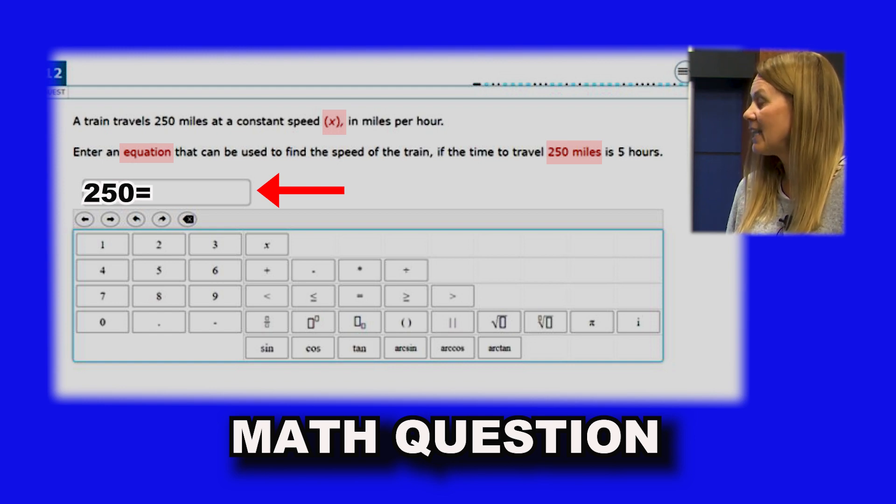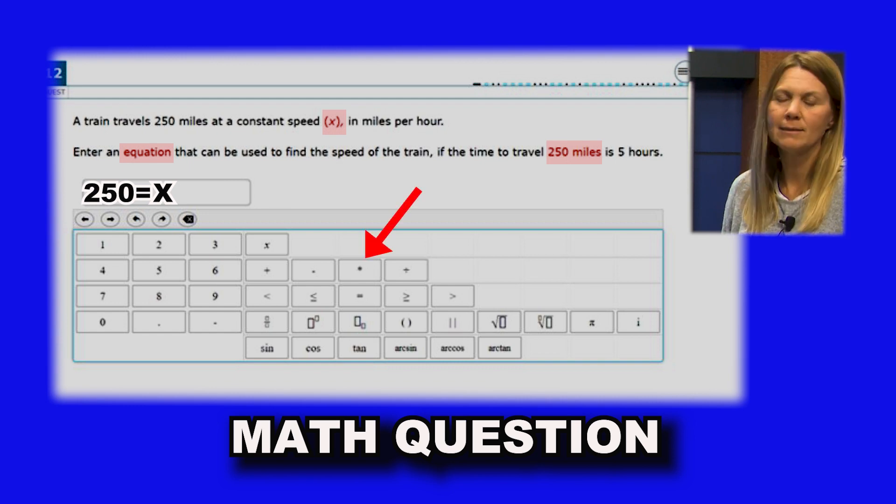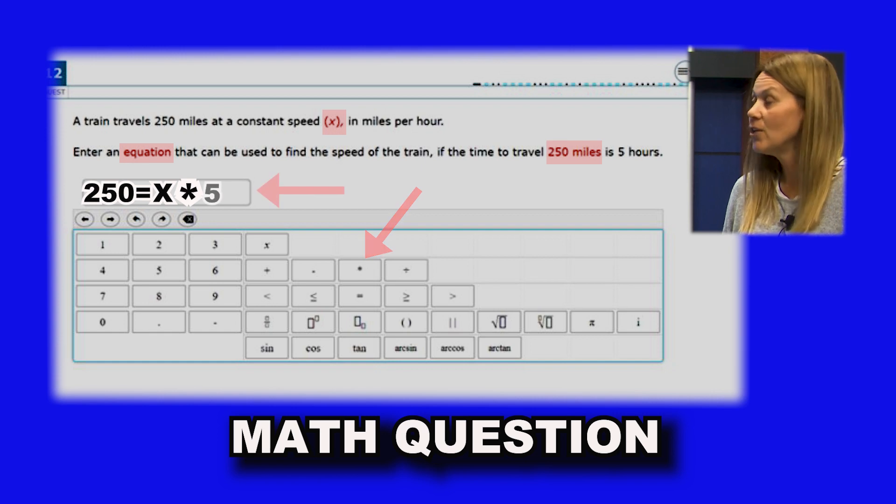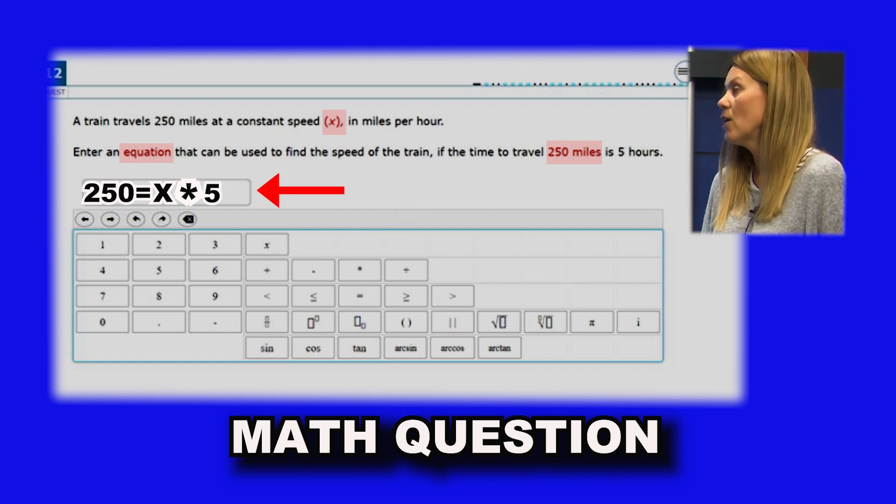equals, and I'm going to use the letter x for speed or the rate. I'm actually going to type this in, multiplying it by my time which would be my hours, and if you need to, this right here would be times and you would put the actual five in. So that's how you would go ahead and complete this equation for this problem. So remember to read these questions carefully and make sure